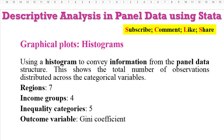Thank you for joining me once again on Crunch Econometrics. Still on our panel data series in Stata, today we shall be looking at how we can use histograms to convey information from the panel data. Remember we have three categorical variables: regions, income groups, and inequality categories.